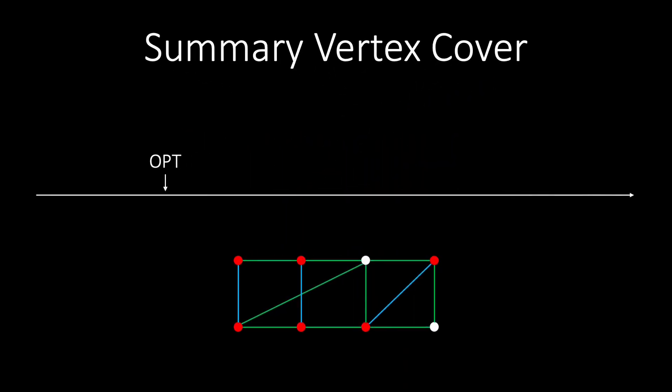To summarize, we looked at the vertex cover problem. This is an NP-hard problem so we cannot hope for an exact algorithm. We first saw a naive algorithm that gave an approximation ratio of n minus 1. We then saw a counterintuitive modification to this algorithm that achieved an approximation ratio of 2.